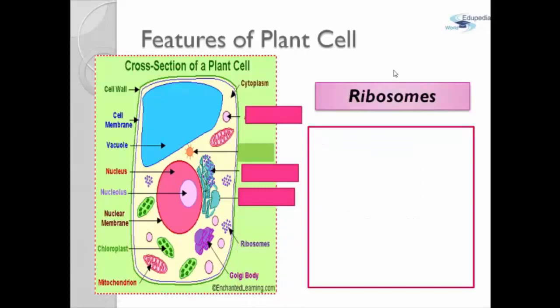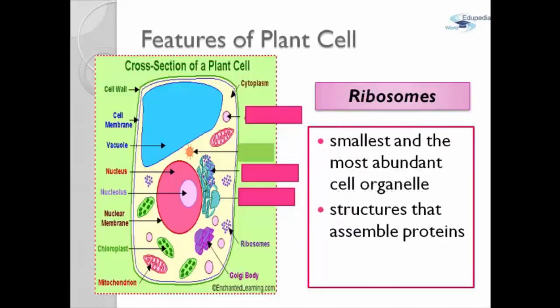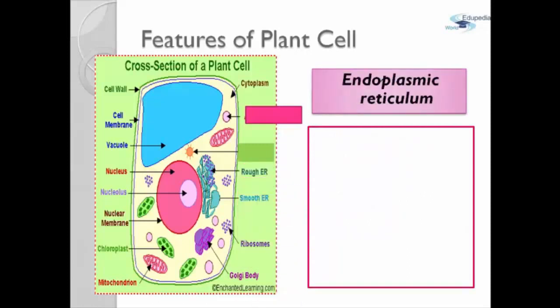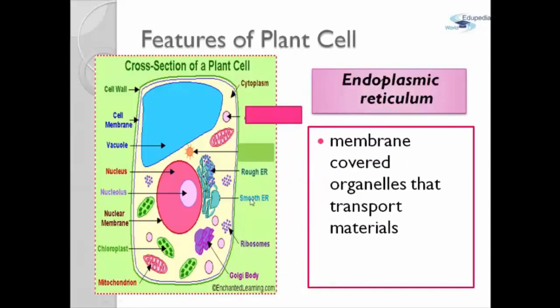Next is ribosomes. Ribosomes is the smallest and most abundant cell organelles and structures that assemble proteins. Next is the endoplasmic reticulum. Like animal cells, it has rough and smooth.